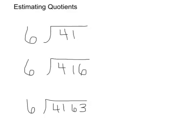This video is about how to estimate quotients. I've got three examples I'm going to share with you. One way to estimate is to use compatible numbers. Compatible numbers are numbers that are easy to divide.